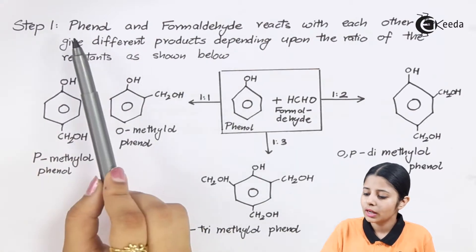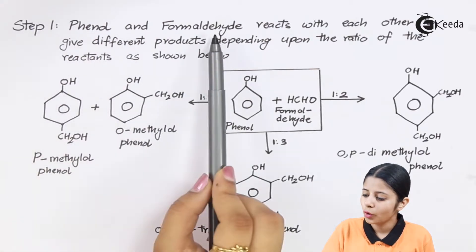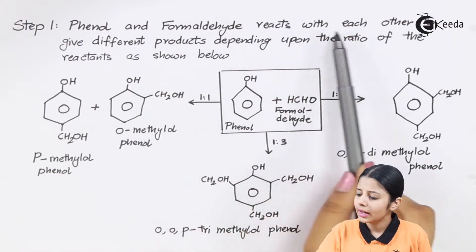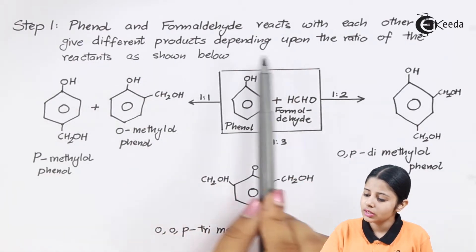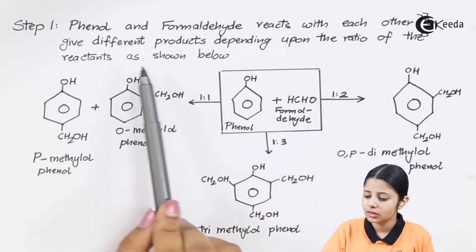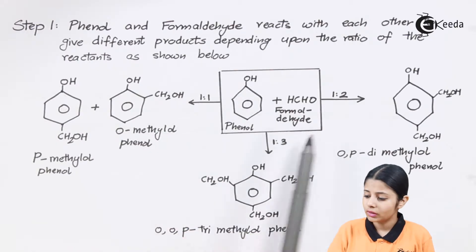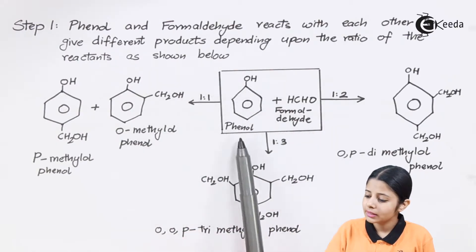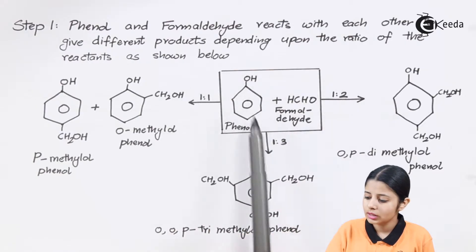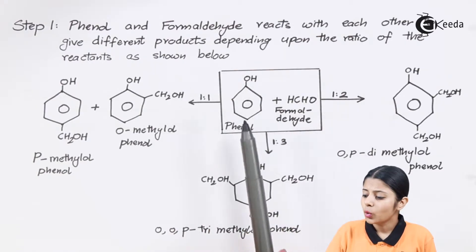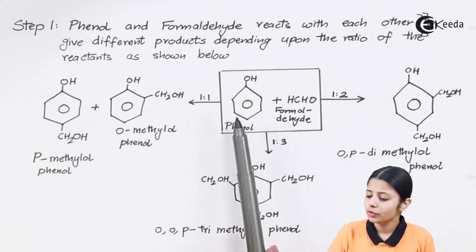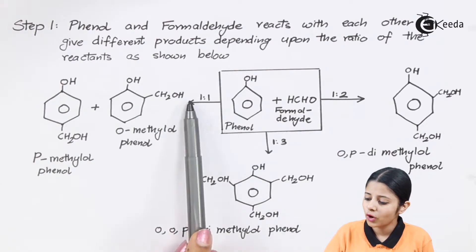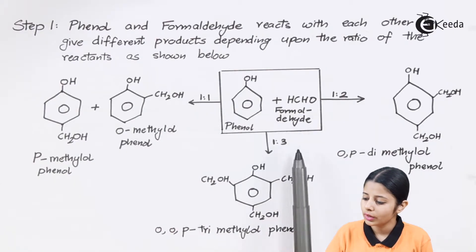Let us look at the first step. Here I have phenol and formaldehyde — both of these are my reactants, also known as monomers. They react with each other to give different products depending on the ratio of the reactants. The reactants are shown in a box, and by changing the proportion I will get different products. The ratios shown are 1:1, 1:2, and 1:3.